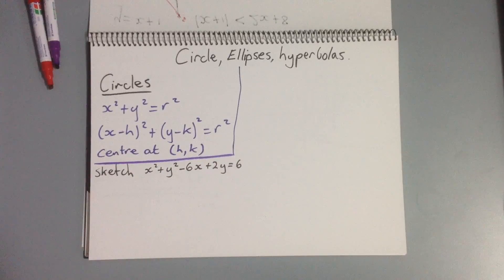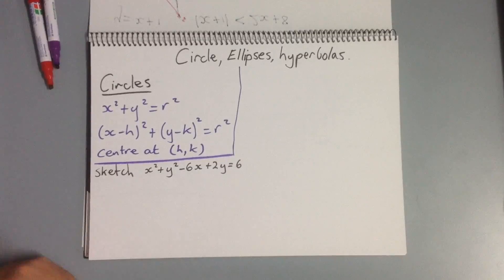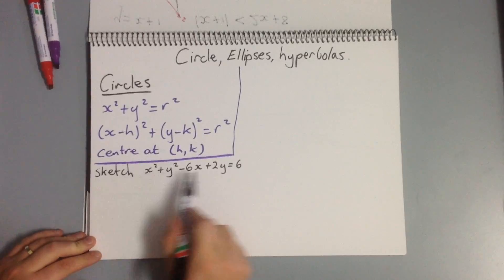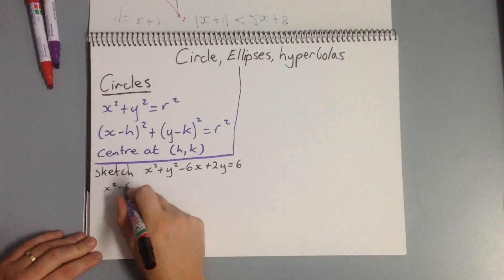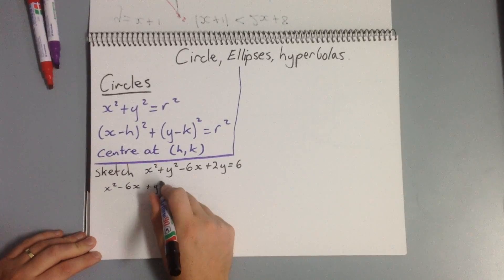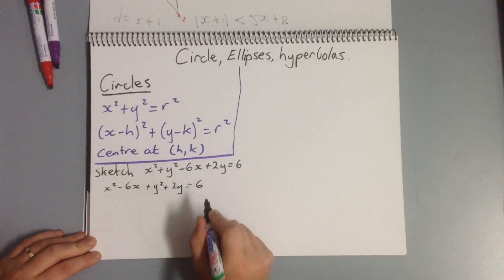So if we have a look at this example, we've got: sketch x squared plus y squared minus 6x plus 2y equals 6. In order to do that, what we need to do is first complete the square. So we want to group our terms together: x squared minus 6x plus y squared plus 2y equals 6.